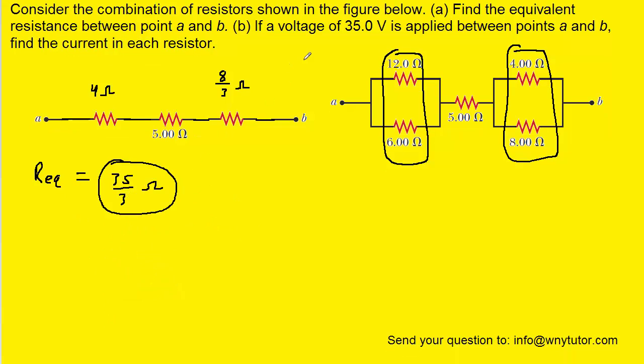Now for part B, we're given a voltage of 35 volts, so we can use Ohm's law to calculate the amount of current flowing through this circuit. We'll use this equation and plug in the 35 volts for delta V, and then we're going to plug in for the resistance the 35 thirds ohms that we just computed. When we compute that, we get a current of 3 amps.